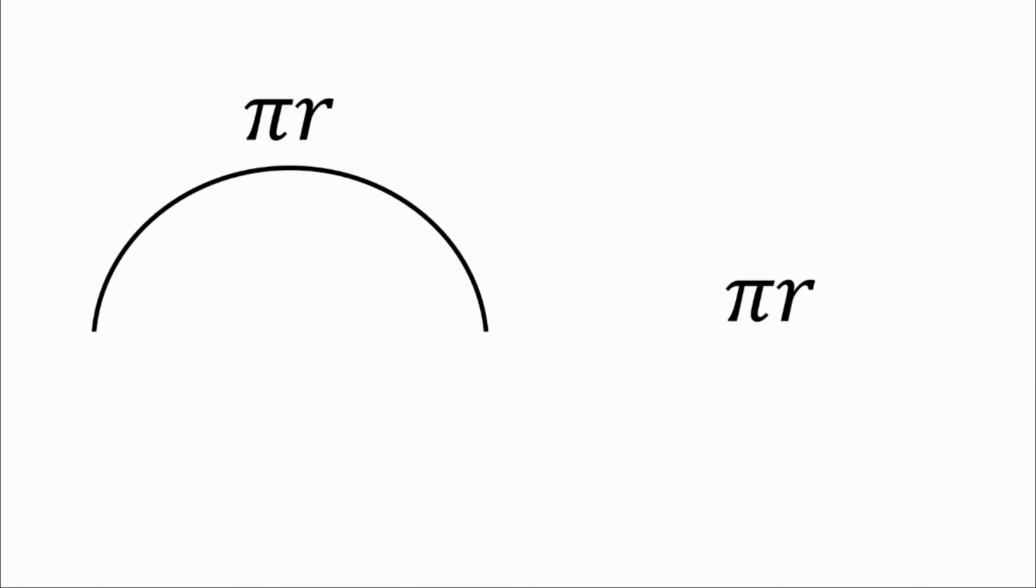So we know that the curved part of our semicircle is going to be a total of πr and then we need to add some radii.